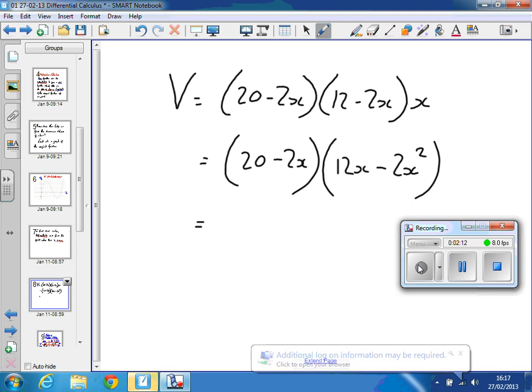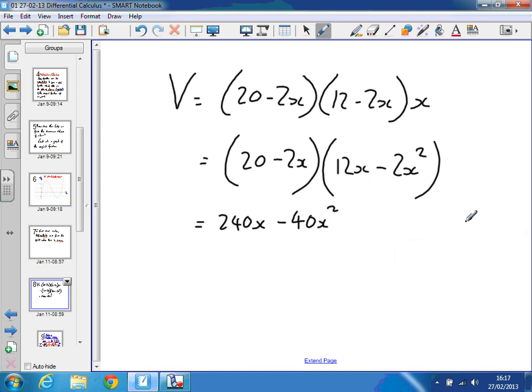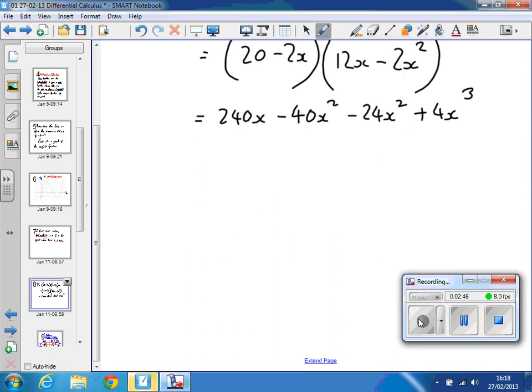So, 20 times 12x, 240x. 20 times minus 2x squared is minus 40x squared. Right, Jack? Minus 2x times 12x is minus 24x squared. Minus 2x times minus 2x squared is plus 4x cubed. Should we go to that?